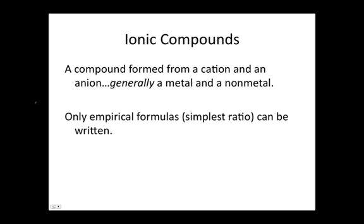An ionic compound is a compound formed from a cation and an anion, so a positively charged ion and a negatively charged ion. Typically, that's a metal and a nonmetal, although you can see some exceptions where you have a polyatomic cation, which is also a nonmetal, combining with a nonmetal anion. And you can have an ionic compound that is two nonmetals.